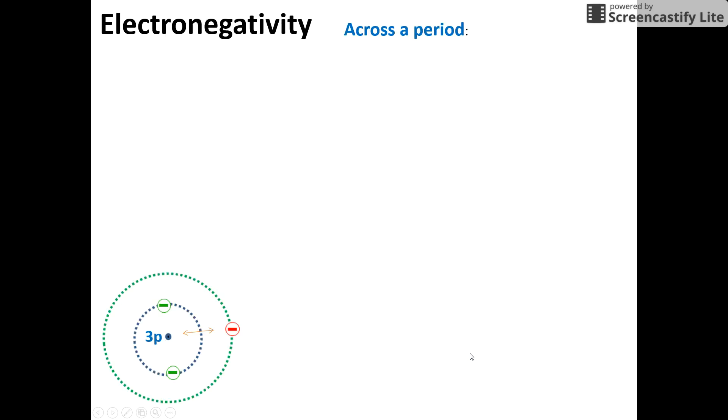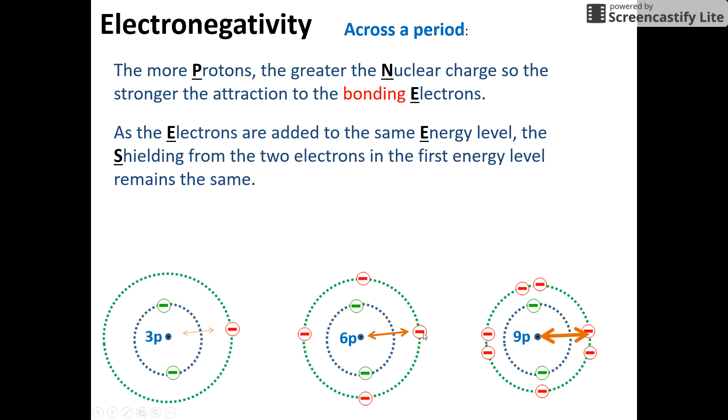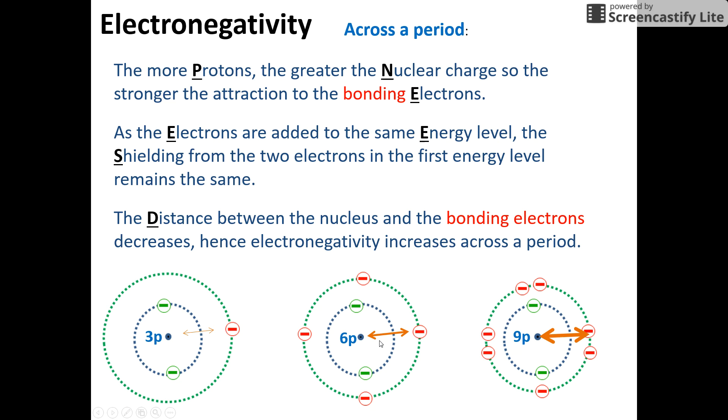So now these are all the steps you need to explain. So you've seen these diagrams before of the attraction. And it's the same thing. More protons, more nuclear charge. Just talk about bonding electrons now and not valence. The electrons are being added to the same energy level. We've got the same amount of shielding. And because that distance is decreasing a bit because of that greater nuclear charge, we're going to have a much stronger attraction and therefore electronegativity increases as we go from lithium to carbon to fluorine.